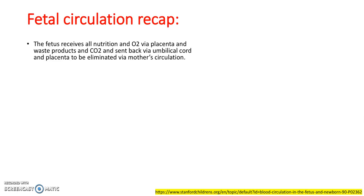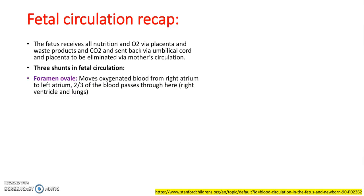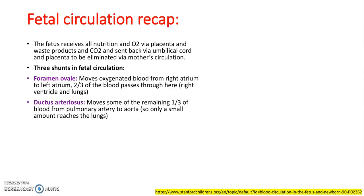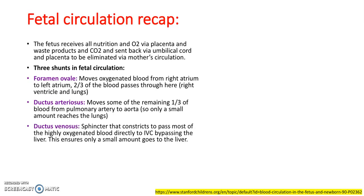Let's quickly go over fetal circulation. The fetus receives all nutrition and oxygen via the placenta, and waste products and CO2 are sent back via the umbilical cord and placenta to be eliminated via the mother's circulation. Three shunts are in the fetal circulation: the foramen ovale, which moves oxygenated blood from the right atrium to the left atrium — two-thirds of the blood passes through here. The ductus arteriosus moves some of the remaining third of blood from the pulmonary artery to the aorta, so only a small amount reaches the lungs. The ductus venosus is a sphincter that constricts to pass most of the highly oxygenated blood directly to the inferior vena cava, bypassing the liver, ensuring only a small amount goes to the liver.